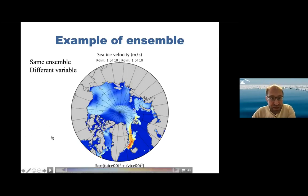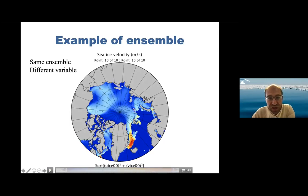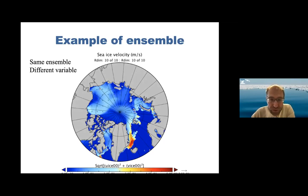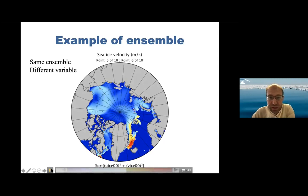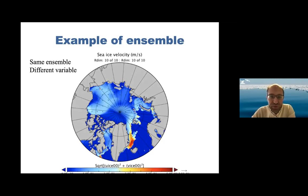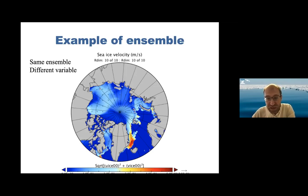Looking at the same ensemble but for sea ice drift: the velocities change from one member to the other, they don't drift exactly in the same direction, but it's always the same places that drift fast and the same that drift slowly. These movements are not imposed by hand — they result from errors in the wind field forcing. Changing the winds slightly produces slight changes in sea ice drift that follows the winds.